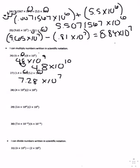Number twenty-eight, you are going to multiply 4 times 2 is 8, and add the exponents: 5 plus 3 is 8, so 8 times 10 to the 8th. Number twenty-nine, you multiply 3.6 times 2 and get 7.2, and you add your exponents: 6 plus 3 is 9.